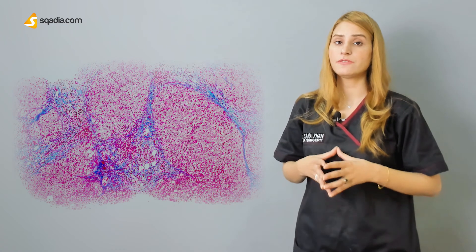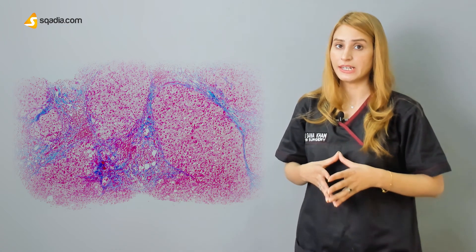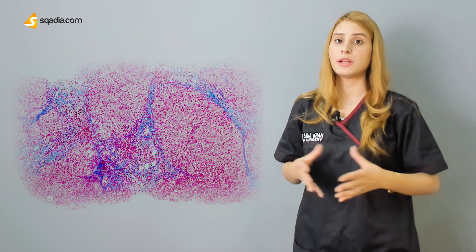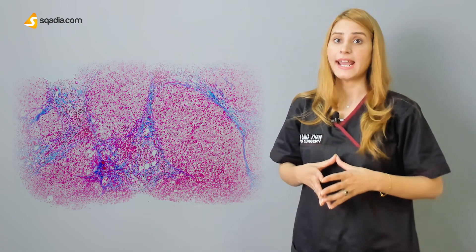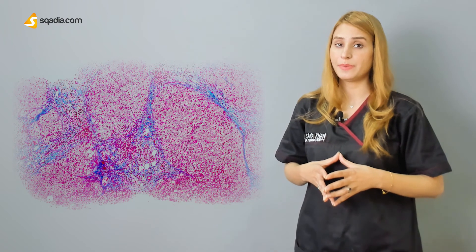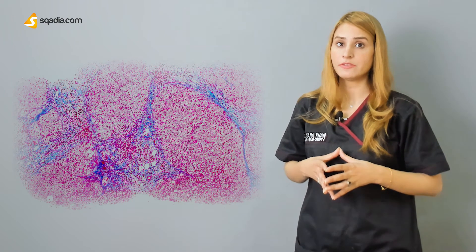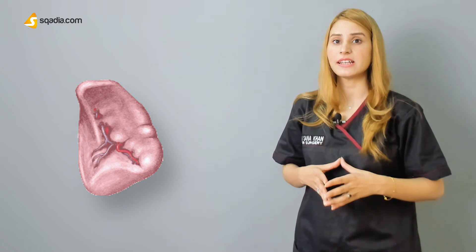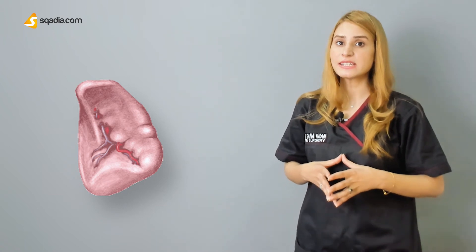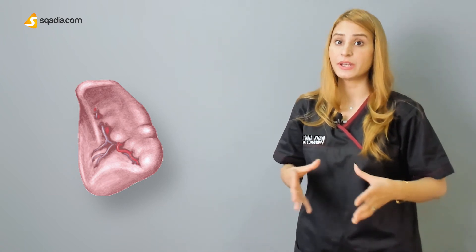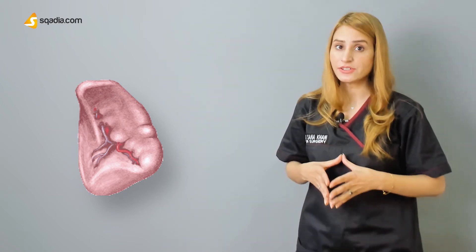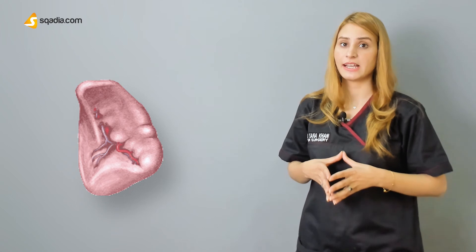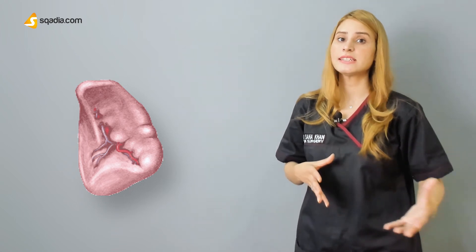The scar tissue blocks the portal flow of blood through the organ, raising blood pressure and disturbing normal function. The spleen, on the other hand, becomes congested, which leads to hypersplenism.